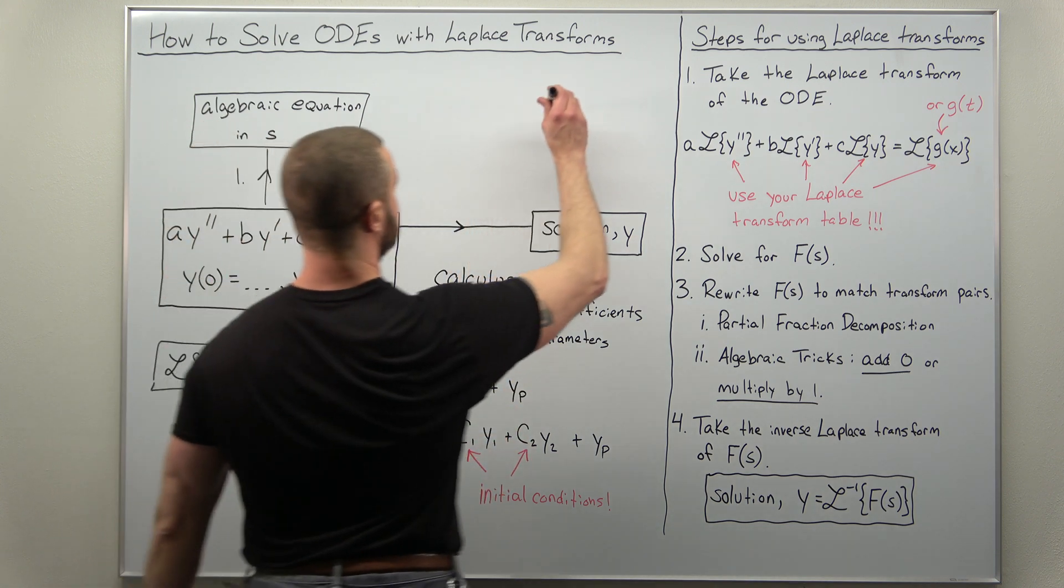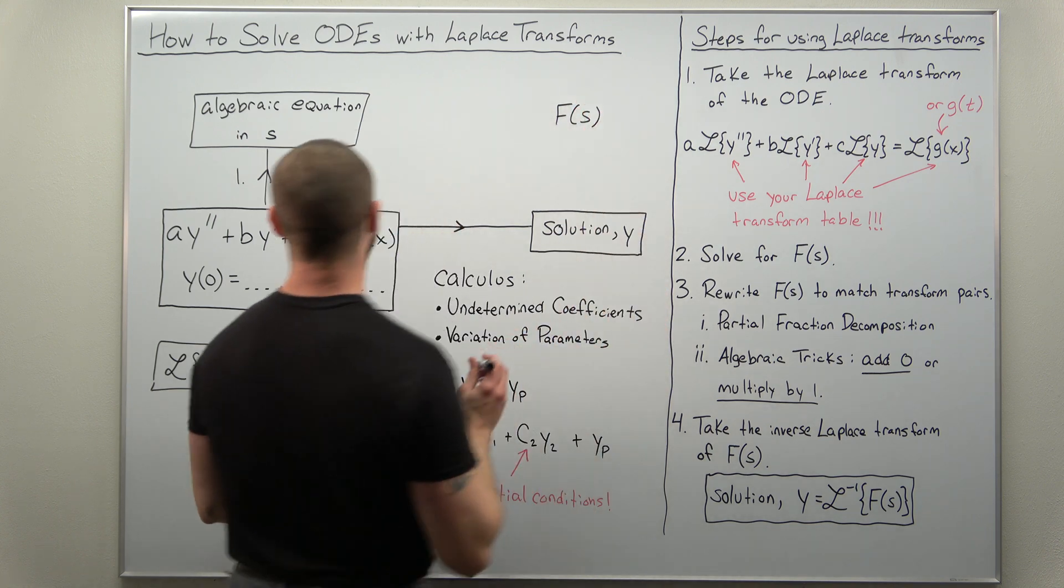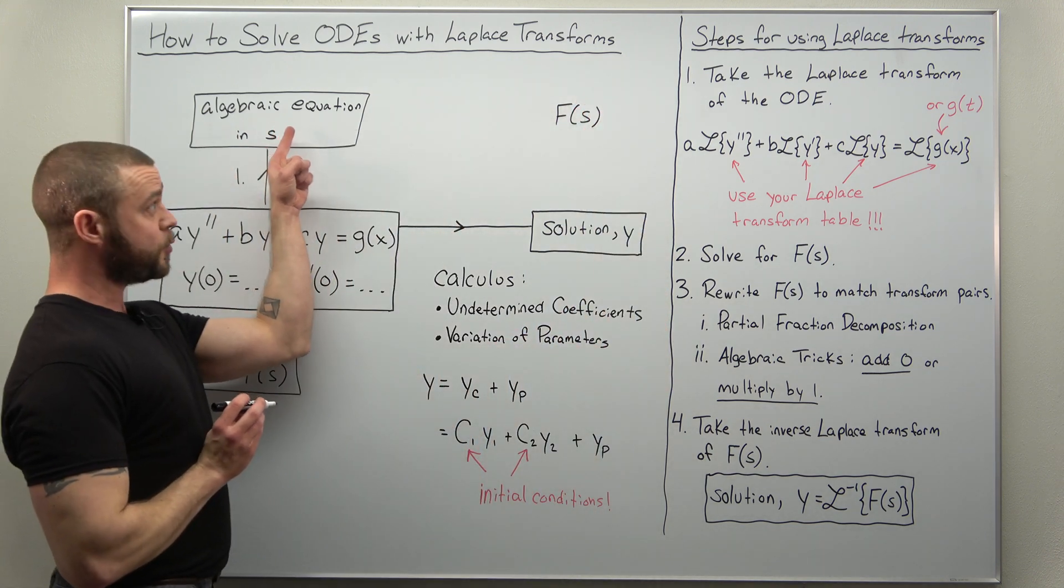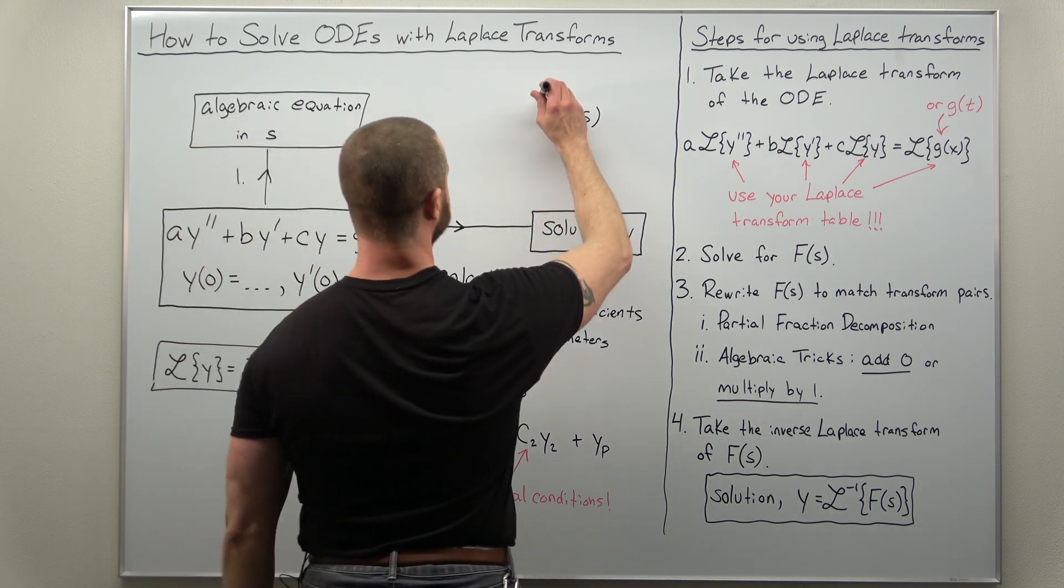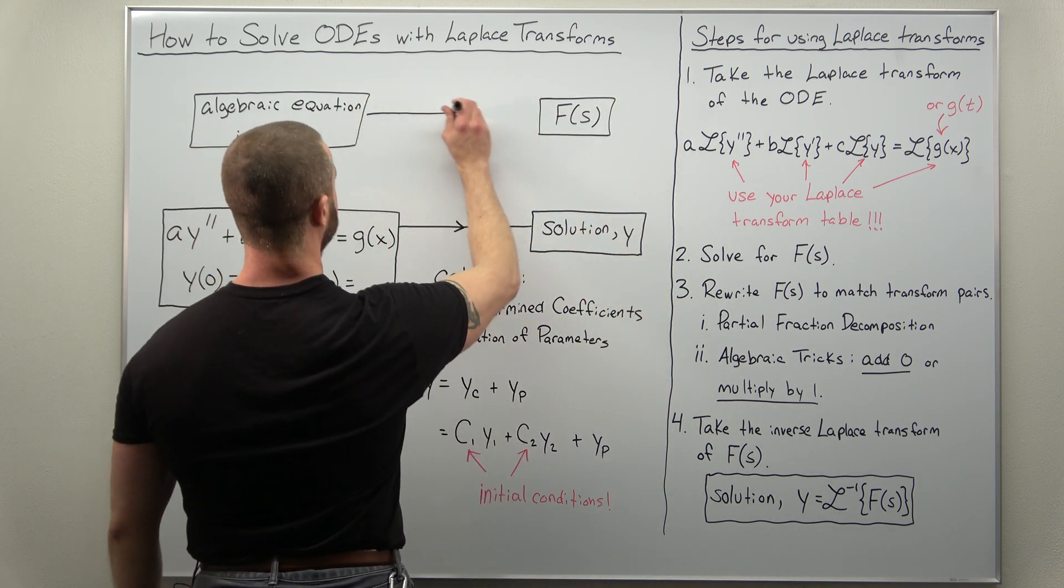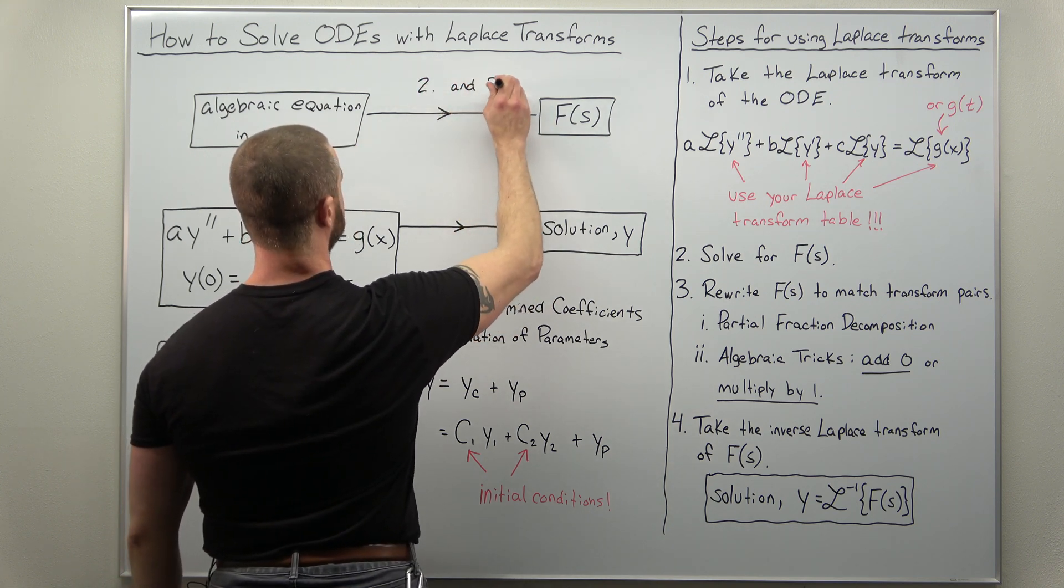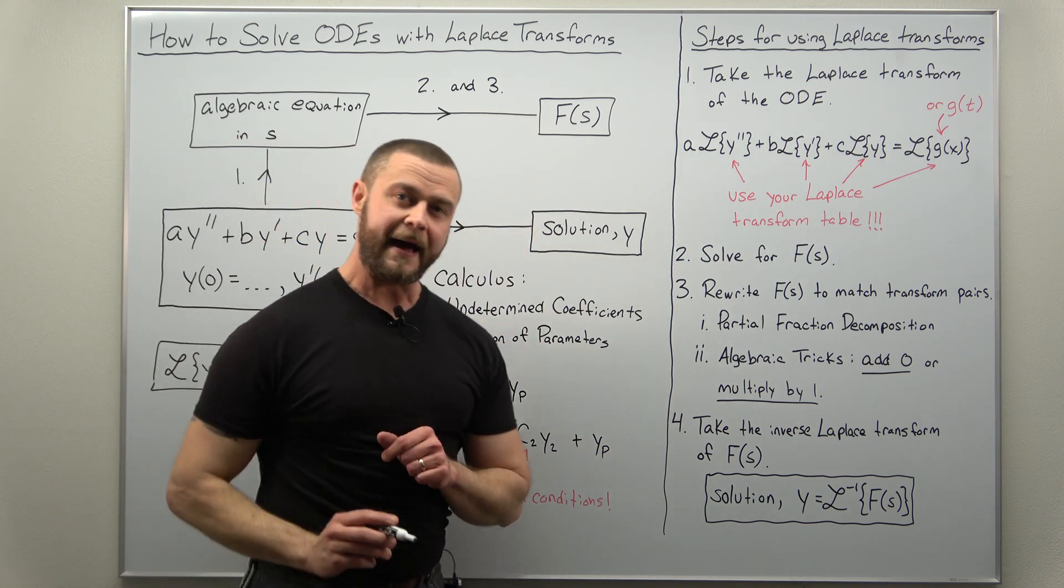So steps two and three go from your algebraic equation to F of s, and steps two and three look like that.